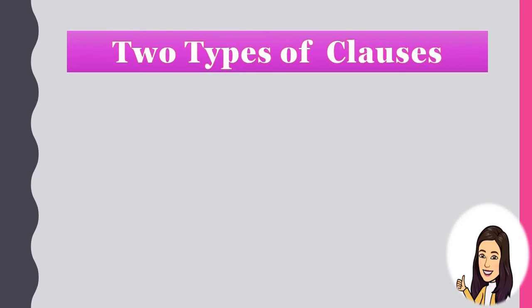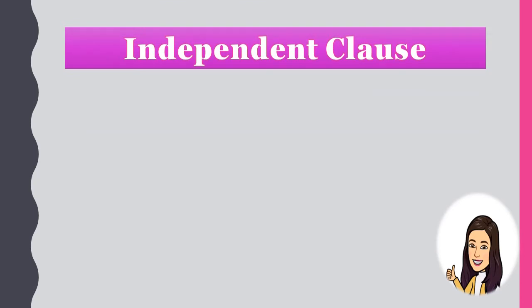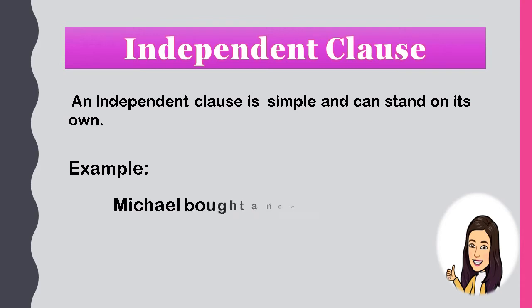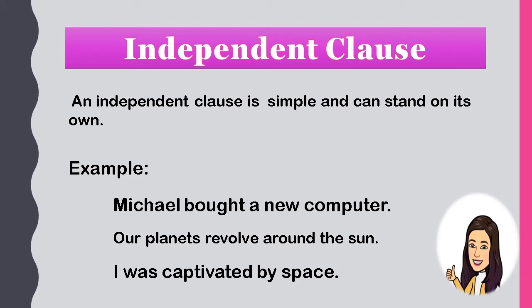There are two types of clauses. You have an Independent Clause, or Main Clause, and a Dependent Clause, or Subordinate Clause. An Independent Clause is simple and can stand on its own. Examples: 'Michael bought a new computer.' 'Our planets revolve around the sun.' 'I was captivated by space.' These clauses are independent — they can stand on their own.